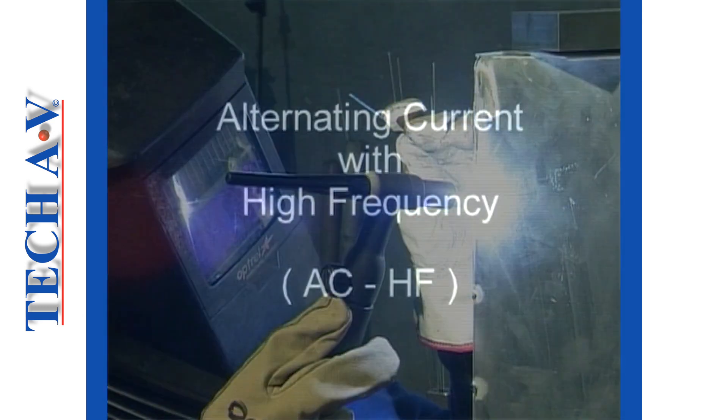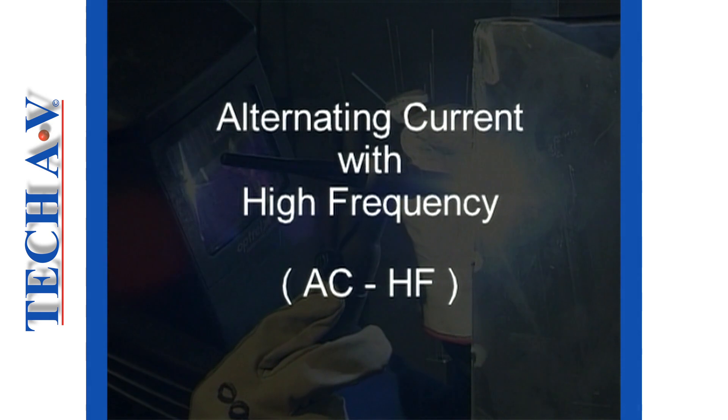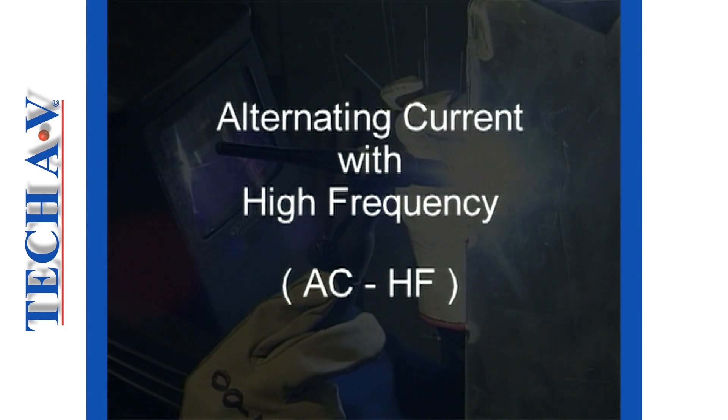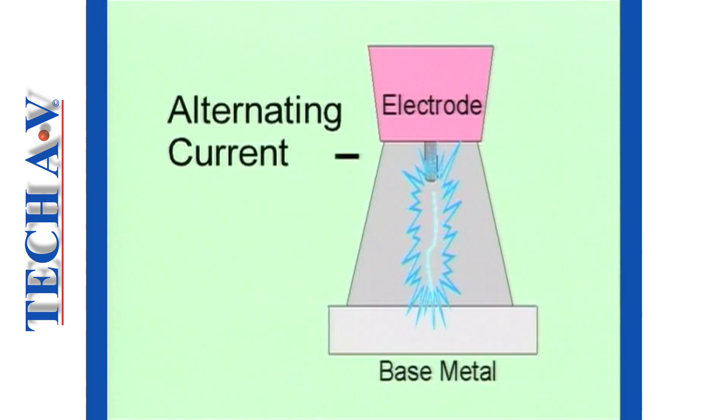The third current selection used with TIG is alternating current with high frequency, or AC-HF. When connected to an AC supply, the polarity changes continuously at the electrode at a frequency of 50 times per second from positive to negative. AC is effectively a combination of DCEN and DCEP.